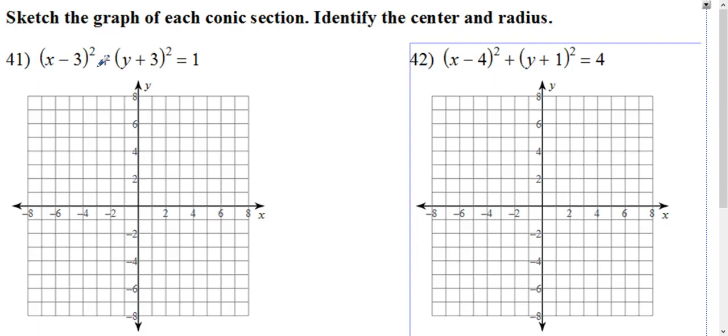So for our first example here, we're going to identify the center and the radius. So our center is h k. And remember, it was x minus h, so h is 3. And y minus k, so k is negative 3. And then our radius, this is r squared, so that means the radius is just 1.